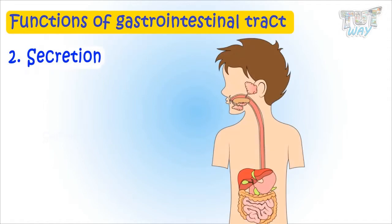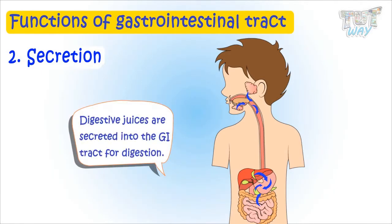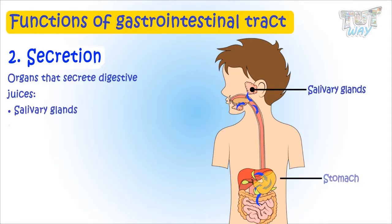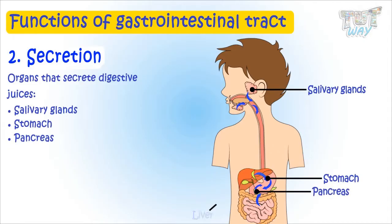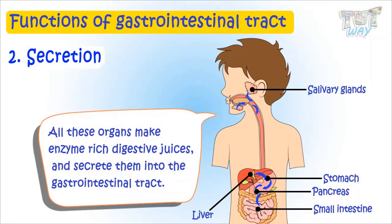So the process of digestion creates these nutrients from the food that we eat. The next important function is secretion. Secretion is the process of releasing chemical substances from a cell or gland. In our digestive system, many digestive juices are secreted into the GI tract that help break down food particles into nutrients. The organs that secrete digestive juices are the salivary glands in the mouth, stomach, pancreas, liver, and small intestine. All these organs make enzyme-rich digestive juices and secrete them into the GI tract to break down food into simpler substances.